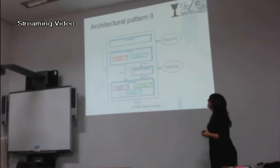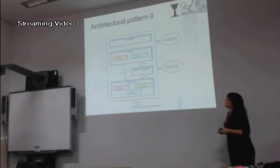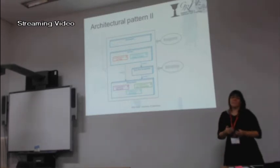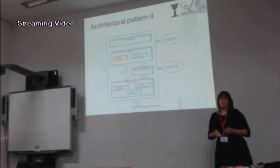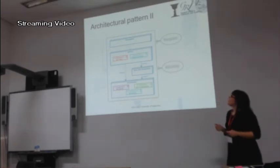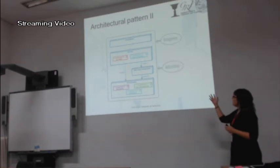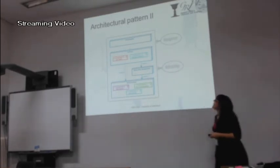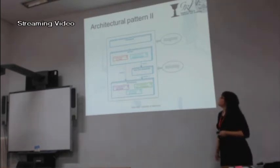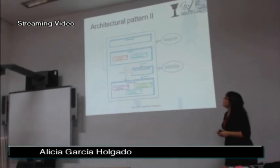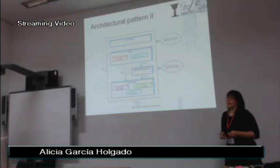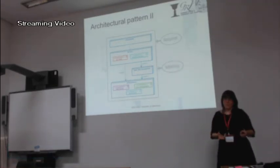The second layer is the static data management layer, because although each component manages its own data and information, sometimes it is necessary to have information accessible from the different components. So the static data that should be accessible across all components of the ecosystem is managed in that layer.